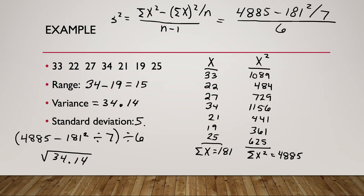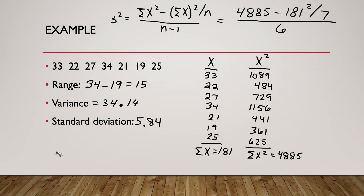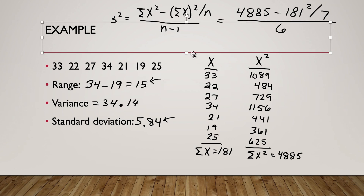Note that that's a much smaller standard deviation than what we got in the last problem. Standard deviation gives you an idea of how spread out your numbers are. With a smaller range in this data set, we should expect to see a smaller standard deviation. That concludes our presentation on calculating measures of variation.